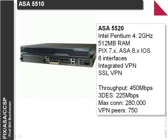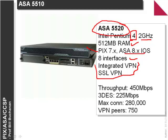The ASA device is now one of the new devices. It has a Pentium 4 architecture, a 2GHz processor, and up to half a gigabyte of RAM. It supports PIX 7 and PIX 8 with 8 interfaces, integrated VPN, and integrated SSL VPN. The basic throughput is about 450Mbps, though that reduces with 3DES. We can have over 280,000 connections at any given time with 750 VPN peers.